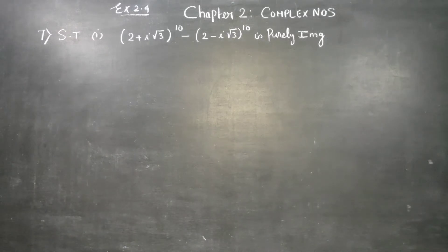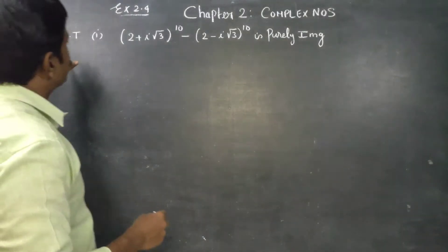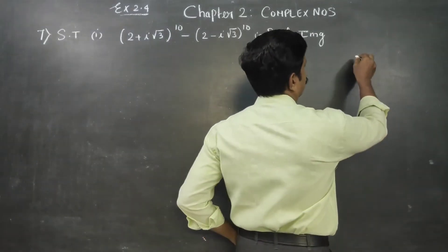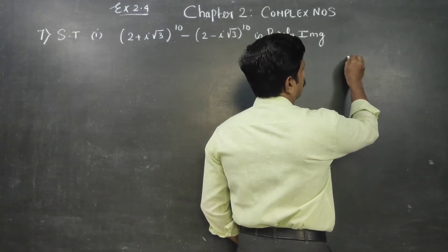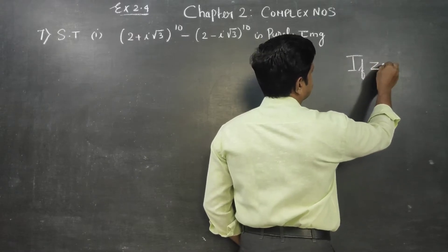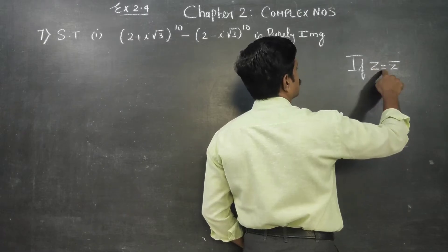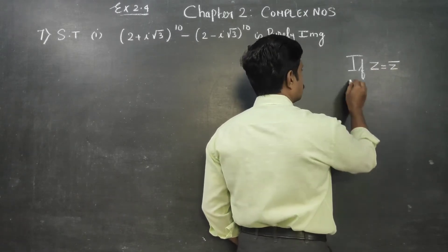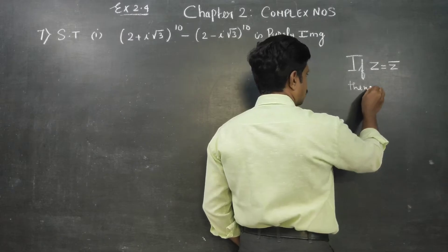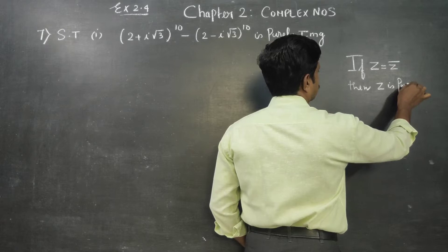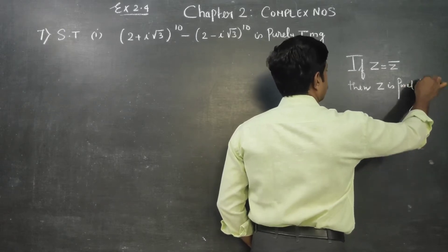Dear 12th standard students, in exercise number 2.4 on complex numbers, we need to show that a complex number is purely imaginary. There is a very important formula: if Z is equal to Z-bar — if Z and its conjugate are equal — then Z is purely real.